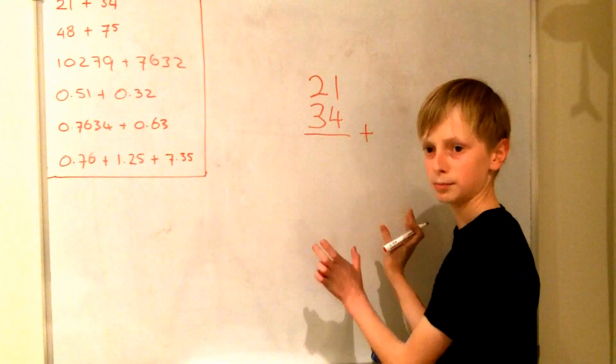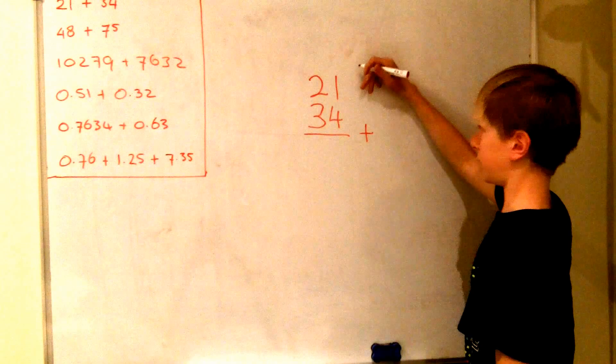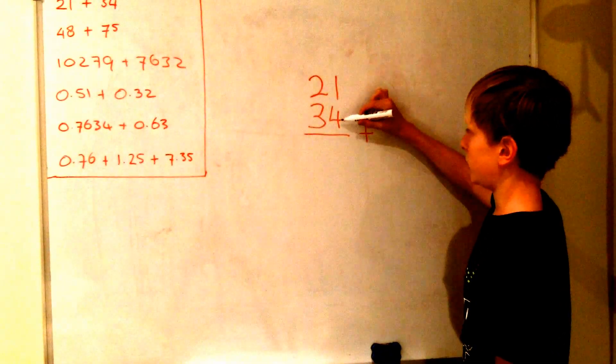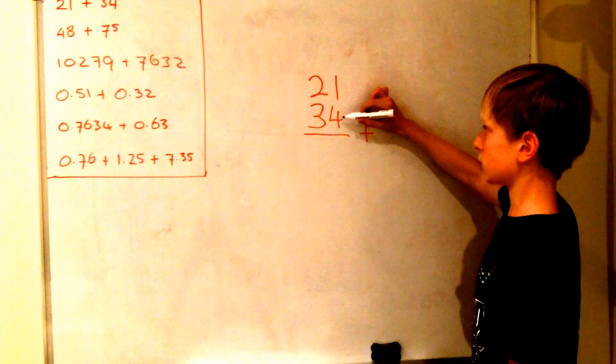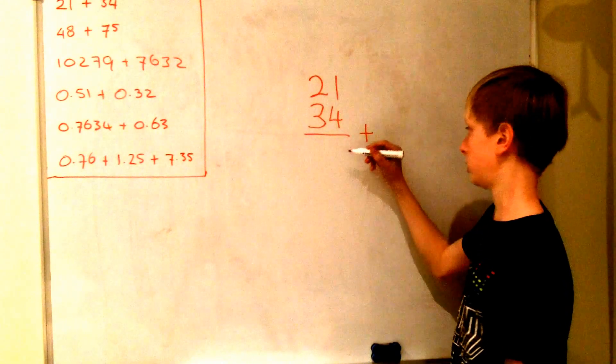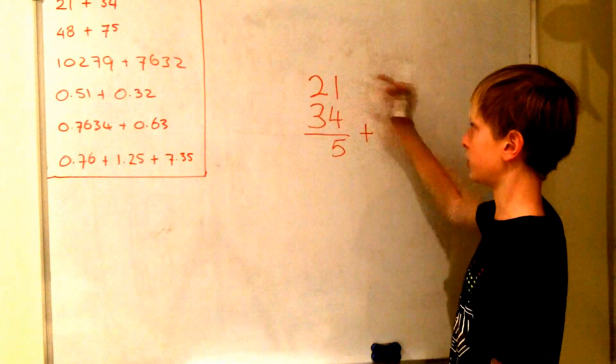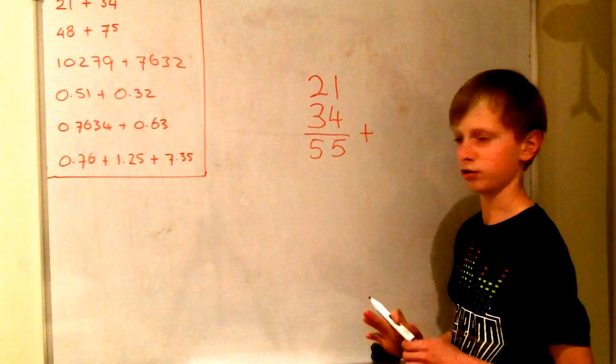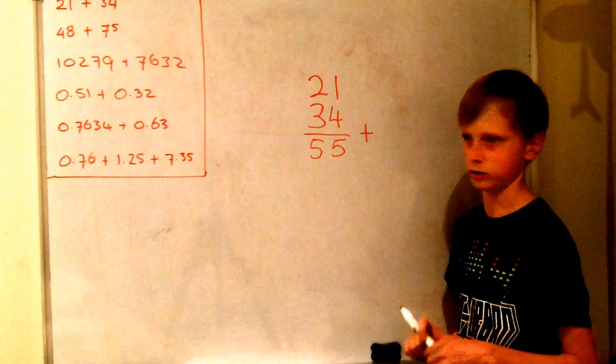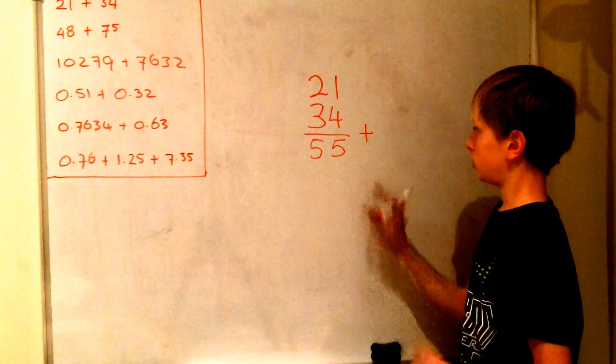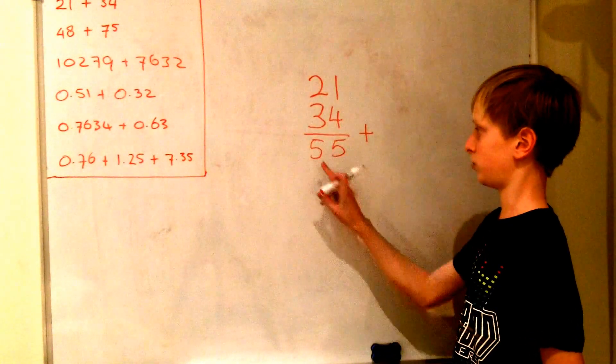So this is actually the plus which is normally in between the numbers. And then we add those two numbers together so 4 and 1 which is 5 and 2 and 3 which is 5. And this is actually very easy so as you can see. So the answer to this question will be 55.